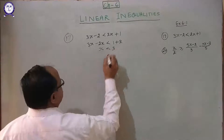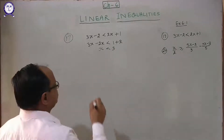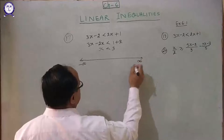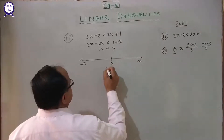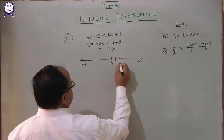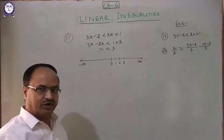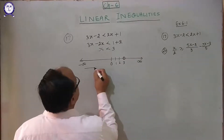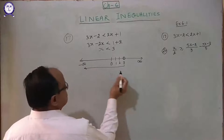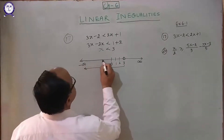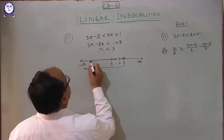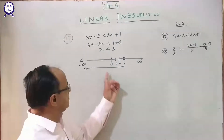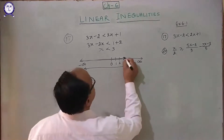Therefore x less than 3. Now on the number line from minus infinity to plus infinity, we mark 0, then 1, 2, 3 on the right and minus 1, minus 2, minus 3 on the left. Less than 3 means we shade this portion to the left of 3.